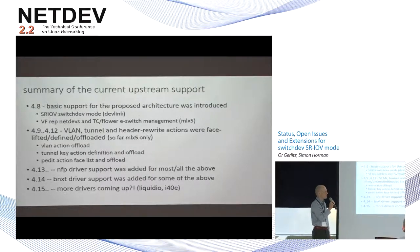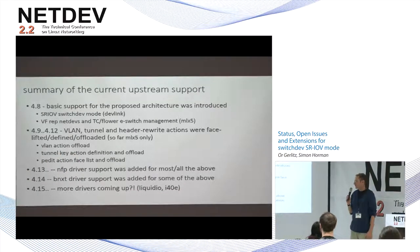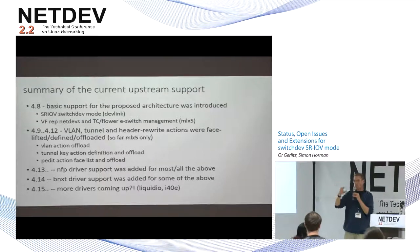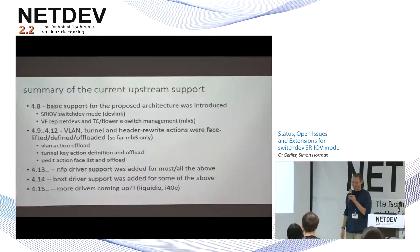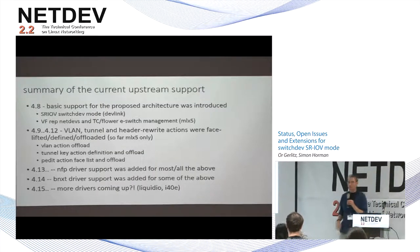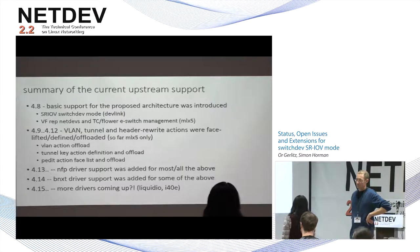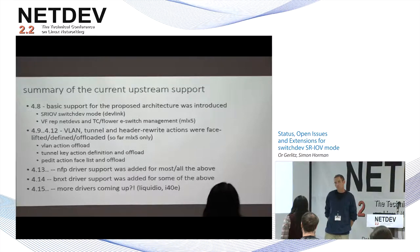The essence of the new mode is that you get representers for the e-switch ports in the form of a net device, and then you can apply a kernel data path on top of that. One of the challenges is that most devices can expose the switch dev mode, but we're having problems with the slow path — if you send a packet from the VF and there's no match in hardware, it goes out both to the wire and to the representer.